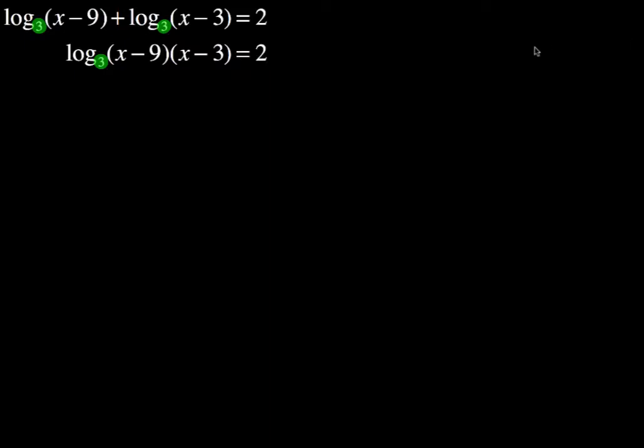But first, we're going to use the distributive property to work with x minus 9 and x minus 3. When you foil that out or use the distributive property, you will end up with the trinomial x squared minus 12x plus 27. And again, our base is 3.